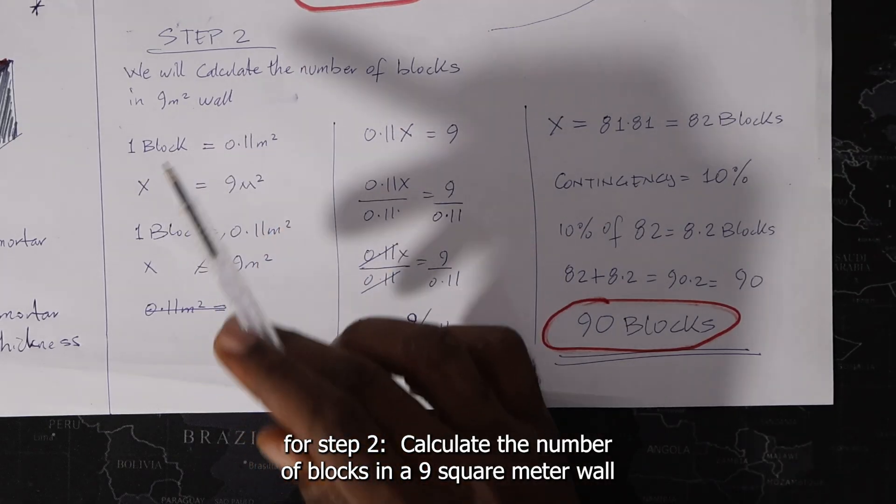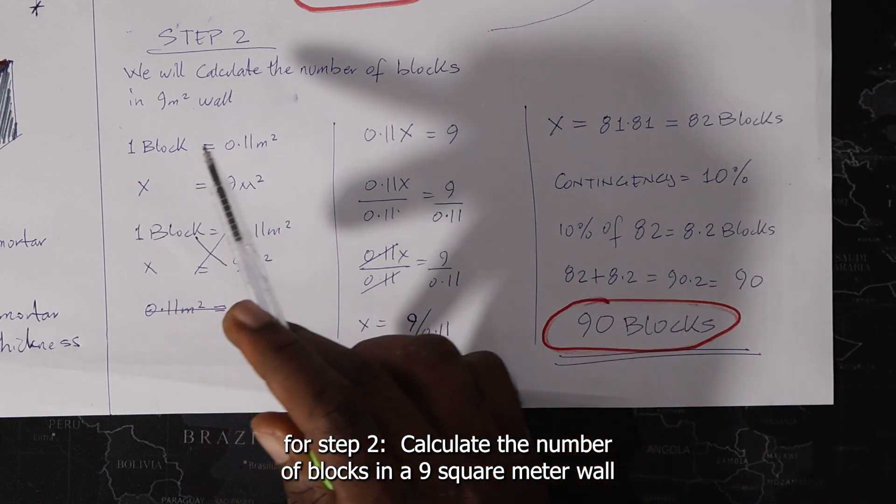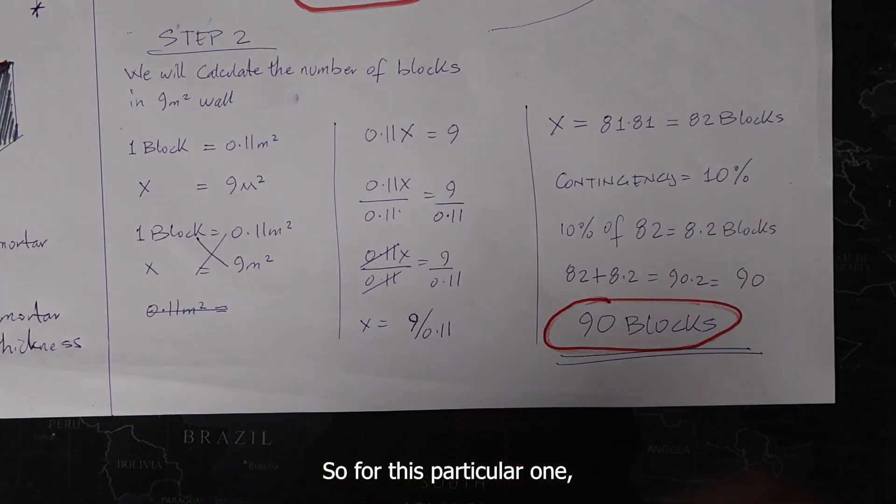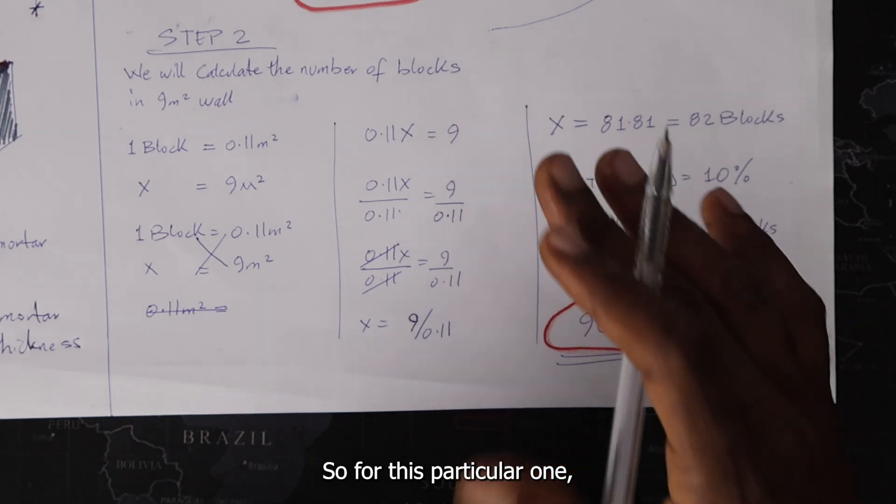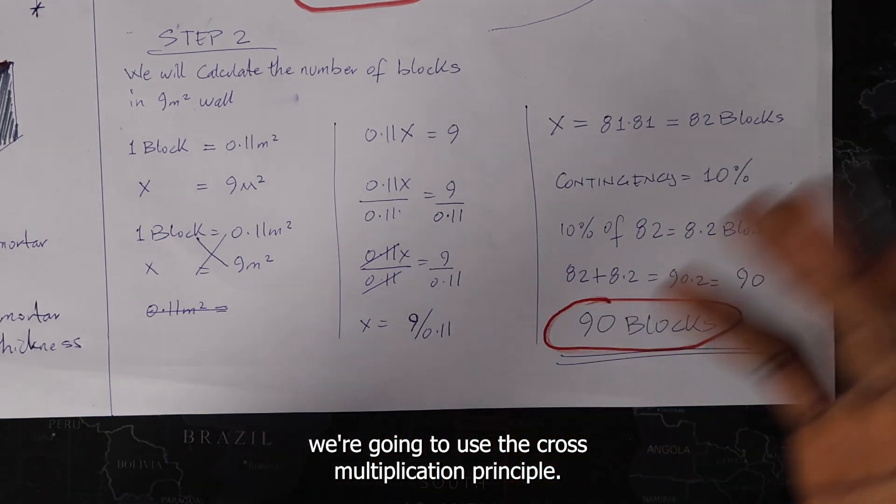For step 2, we will calculate the number of blocks in a 9 square meter wall. So for this particular one, we're going to use the cross multiplication principle.